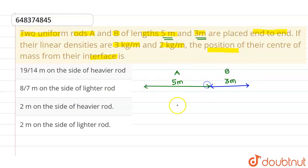Now, linear density of this first rod is 3kg per meter, and linear density of this rod is 2kg per meter.